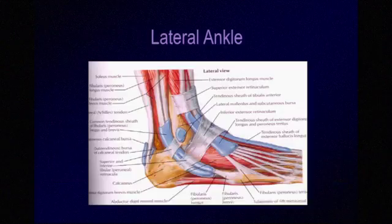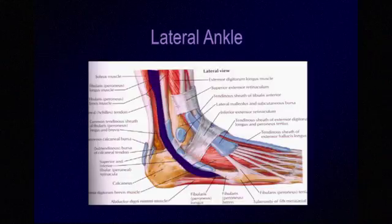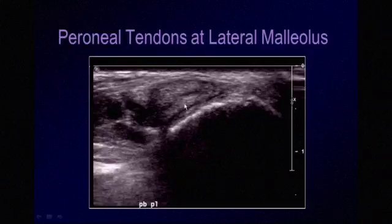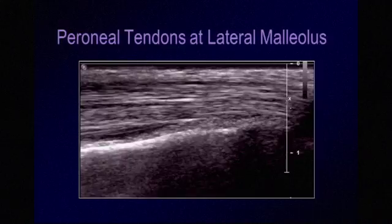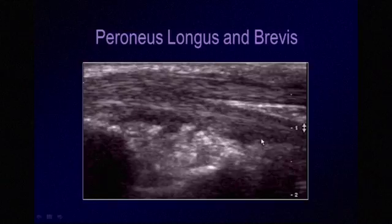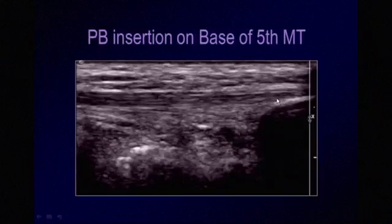Moving on to the lateral ankle, we are looking at the peroneus longus and peroneus brevis tendons. At the lateral malleolus on the axial view, a helpful mnemonic: the brevis is against the bone (B, brevis, bone), and the longus sits superficial or lateral to the brevis tendon. On the long axis view, the tendons are uniformly hyperechoic with fine fibrillar echogenic lines. Distal to the malleolus, the longus and brevis diverge — the longus dives deeper around the foot while the brevis extends to its insertion on the base of the fifth metatarsal.